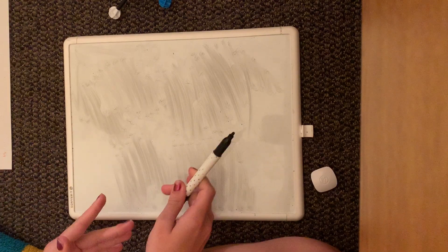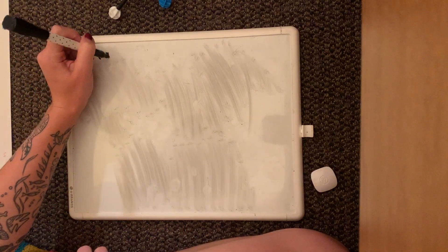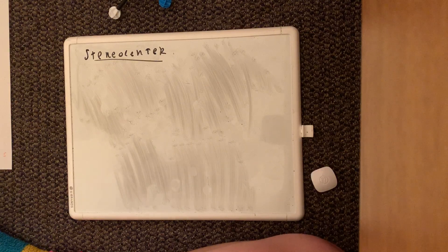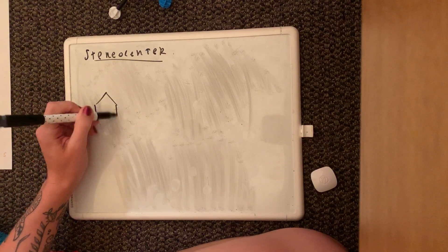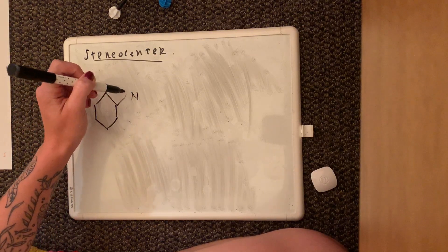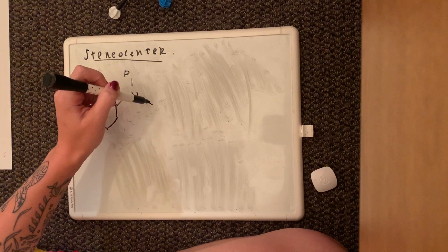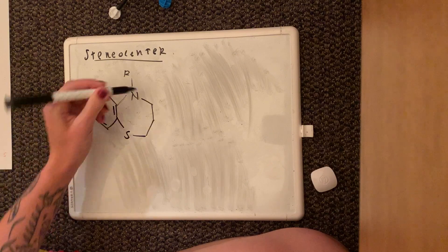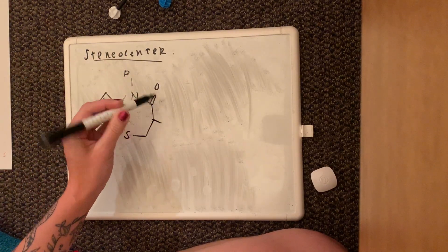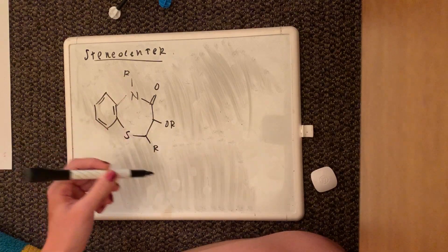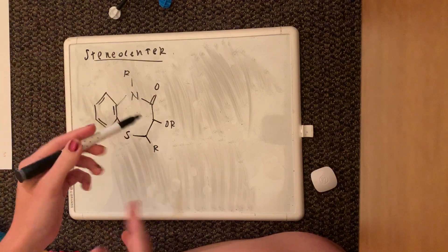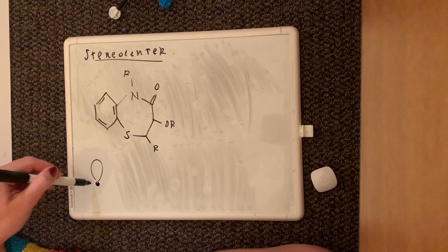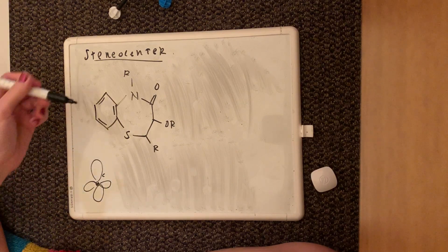Chirality ties in with stereocenters — I already drew out what a stereocenter is so I won't do it again. We're going to do an example and find all the stereocenters present in a molecule. Yes, molecules can have more than one stereocenter. We'll draw the molecule including the double bonds on the rings, a double-bonded oxygen, and an R group — R literally means anything, like chlorine or bromine, just don't let it freak you out. Remember, a stereocenter has four different substituents around the carbon.